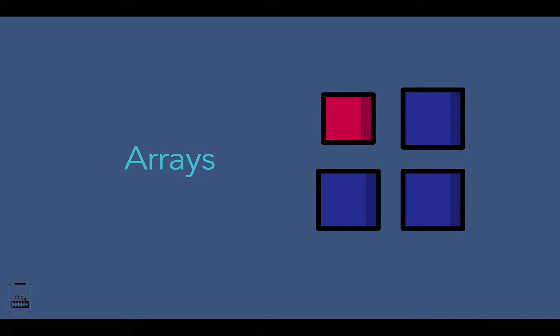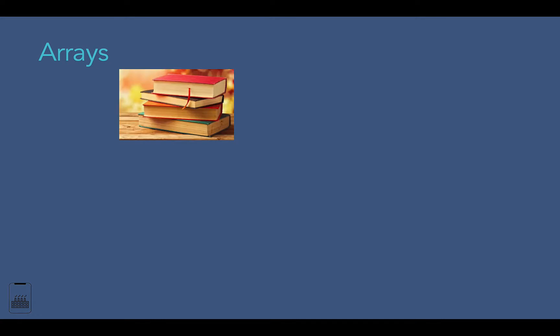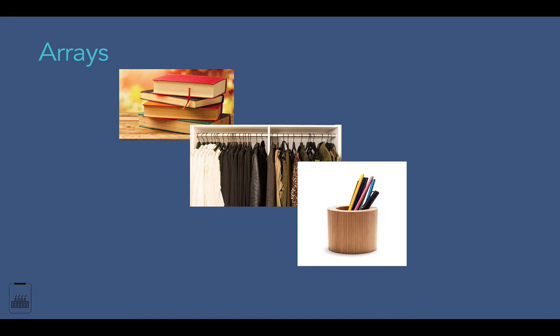From this section we'll start to learn data structures one by one and implement them in Java. In this video we will start to learn the array data structure, which is the most used data structure. An array is simply a collection of objects or things — very powerful data structures that store a list of elements and have endless applications. Simple real-life examples of an array can be a collection of books on your table, clothes in a wardrobe, and pens in your pen stand.